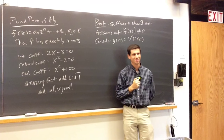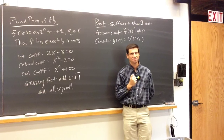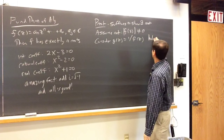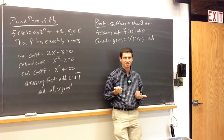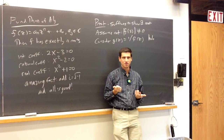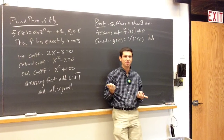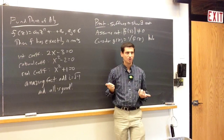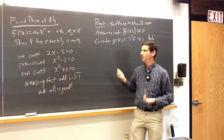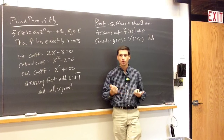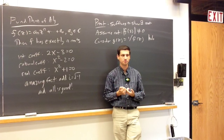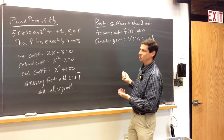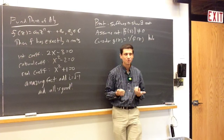So let's consider g of z equals 1 over f of z. What can you tell me about this function? It's holomorphic — f is a finite polynomial. The only time I'm in danger when I take a reciprocal is if I divide by zero, and I'm assuming I don't divide by zero. We must be getting a contradiction at some point. What do you think the contradiction is going to be? That it's constant.